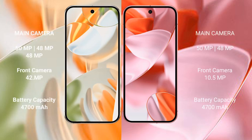Google Pixel 9 Pro features a triple rear camera setup: 50 MP plus 48 MP plus 48 MP, with a 42 MP front camera. Google Pixel 9 features a dual rear camera setup: 50 MP plus 48 MP, with a 10.5 MP front camera.